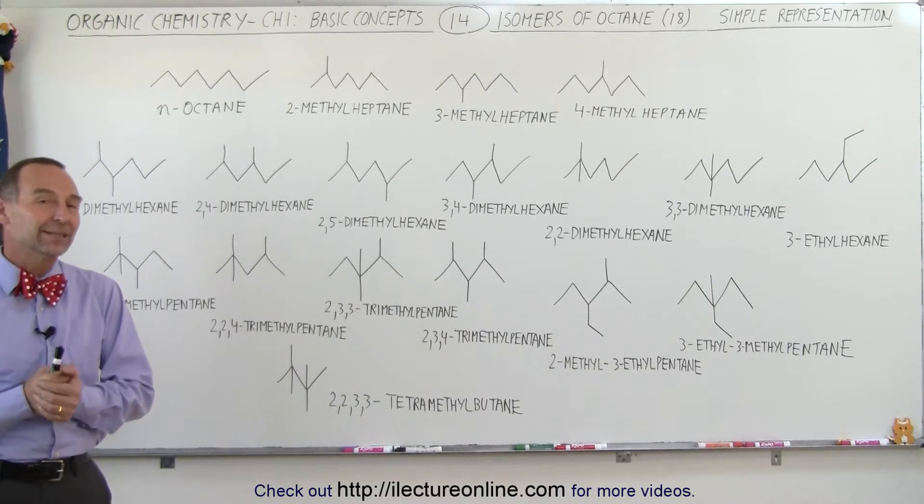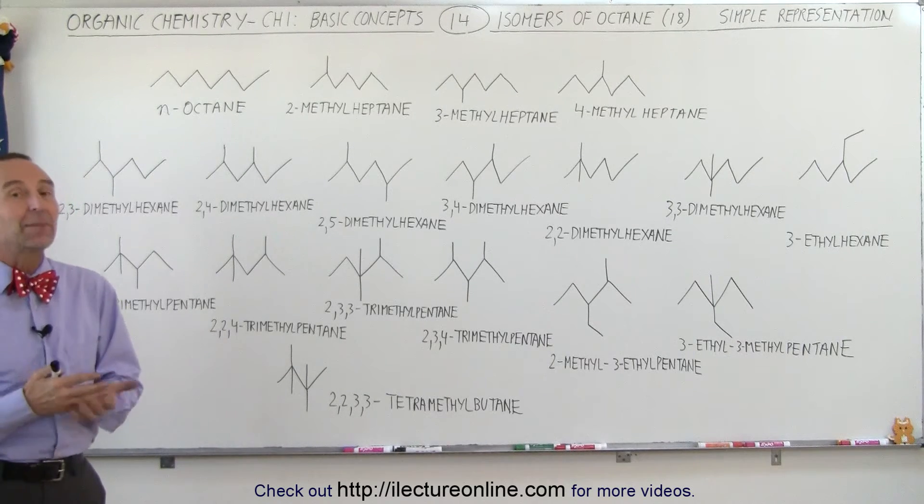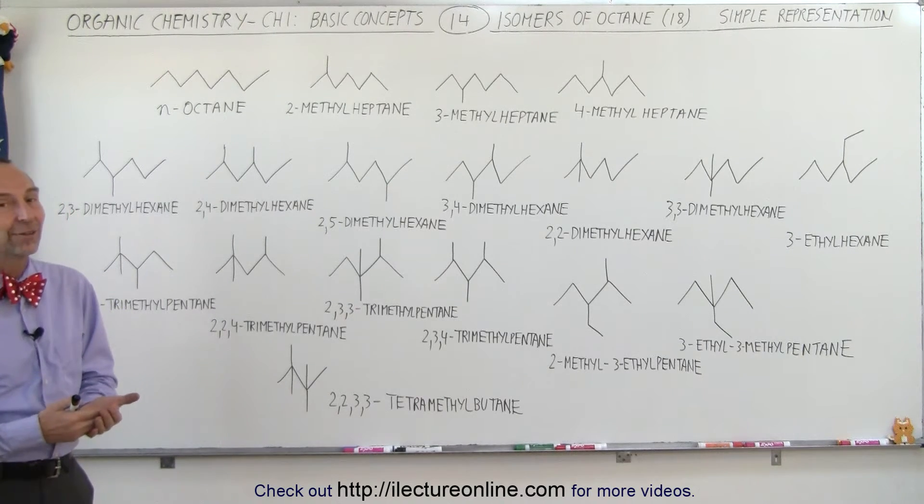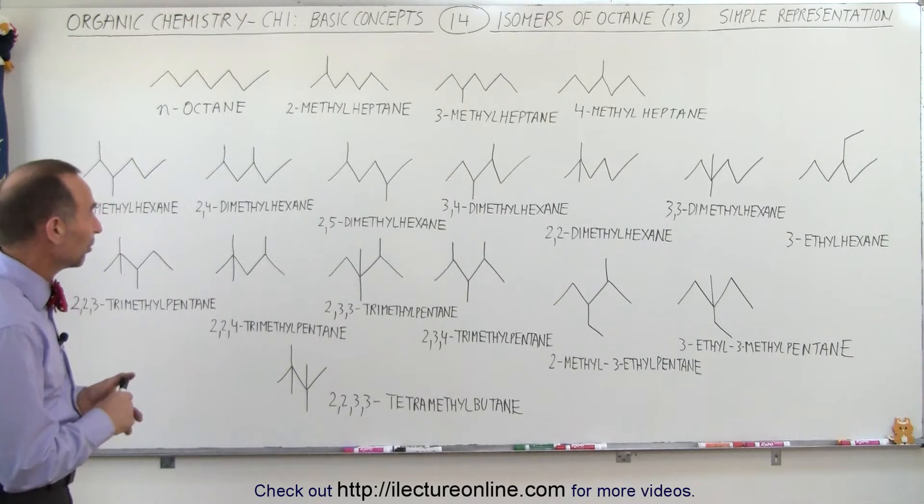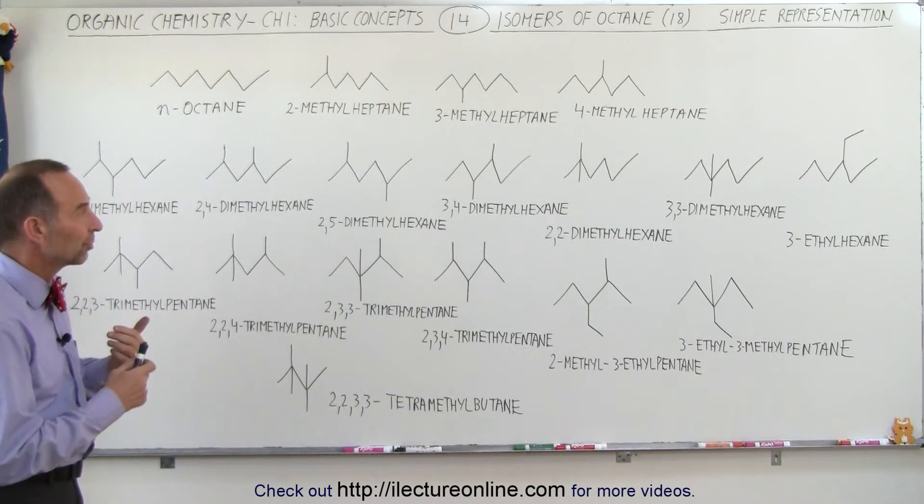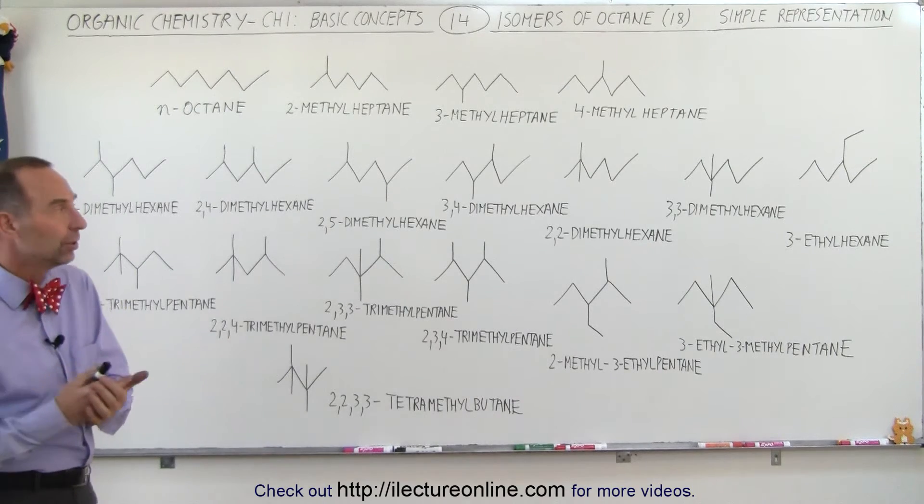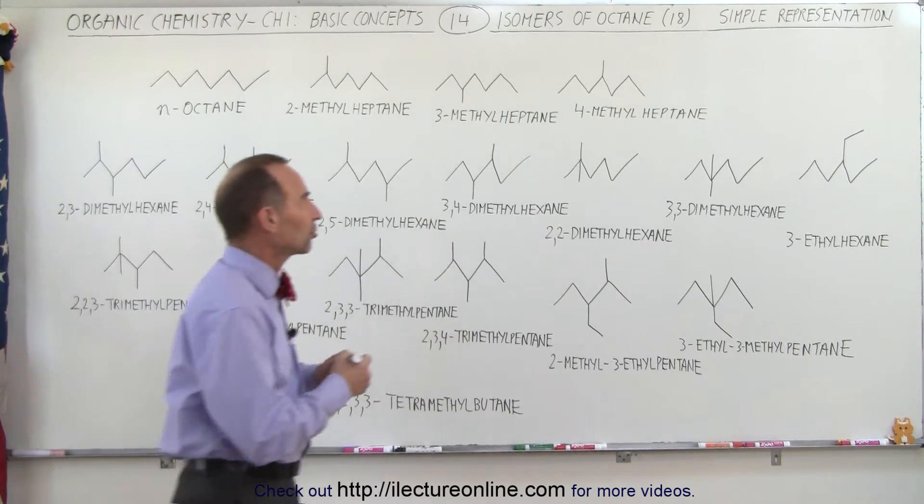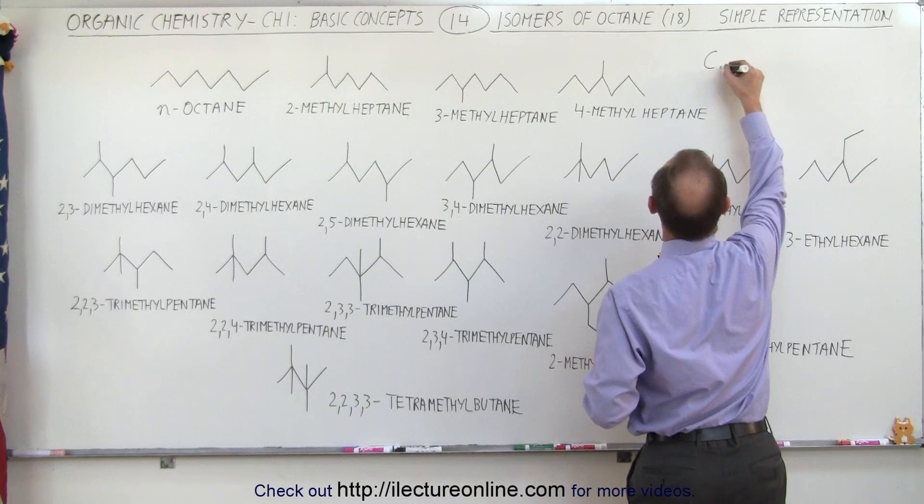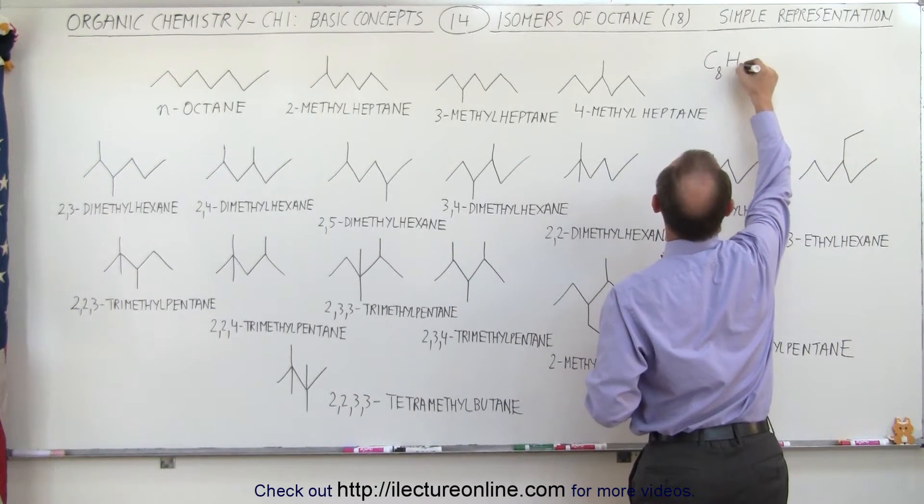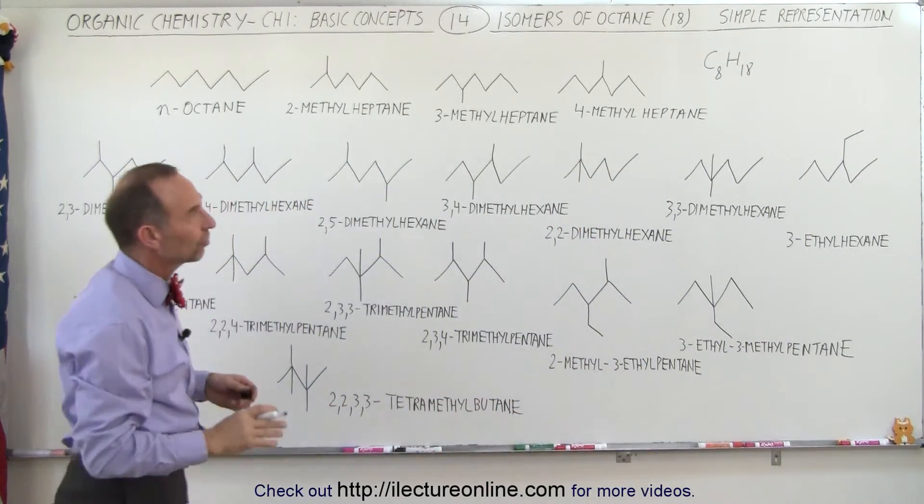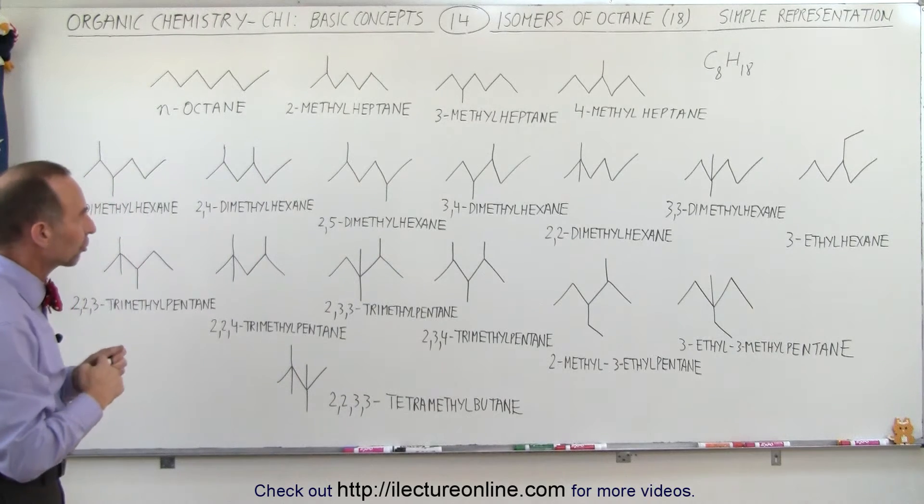Welcome to White Lecture Online. Things are beginning to look complicated because as the number of carbons in the chain increases, the number of isomers increases exponentially. When dealing with octane, there are 18 isomers. Remember, isomers have the same chemical components but different structures. The chemical formula for octane is C8H18. Every one of these has eight carbons and 18 hydrogens but they all have different structures.